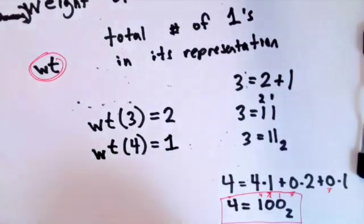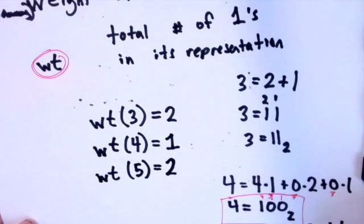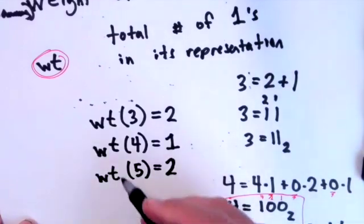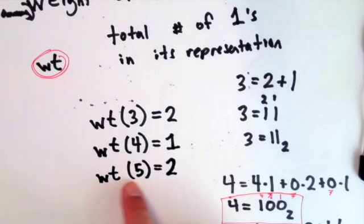What's the binary weight of five? We could write this as one times four plus zero times two plus one times one. This should be one zero one sub two. There are two ones in this representation, so the binary weight of five is two.